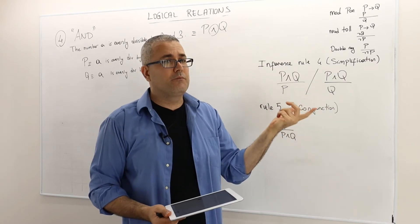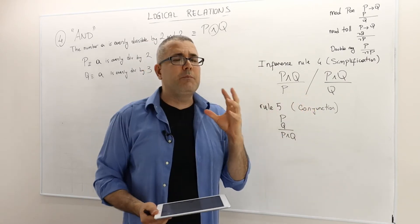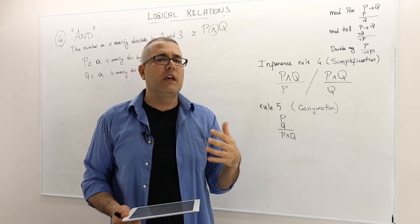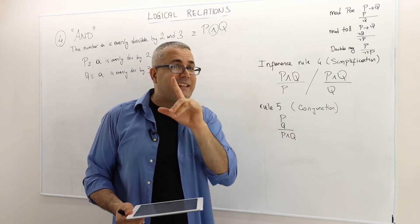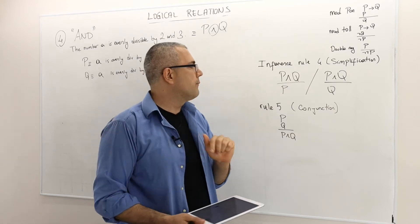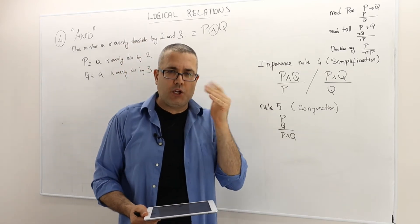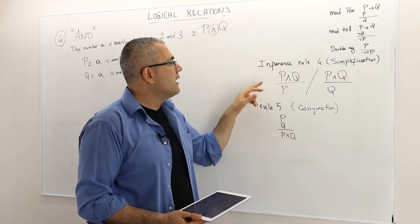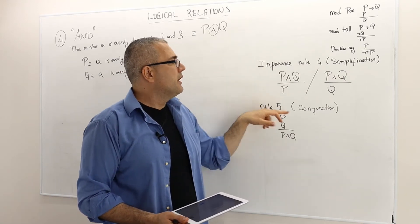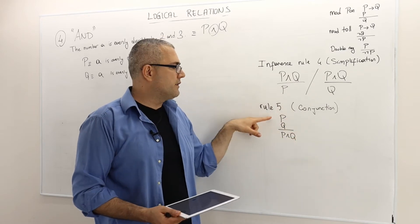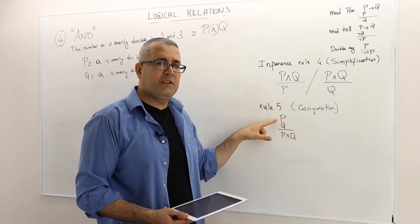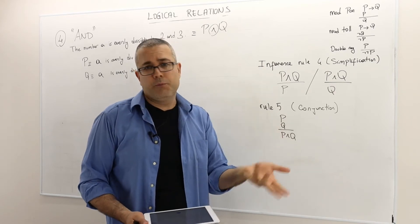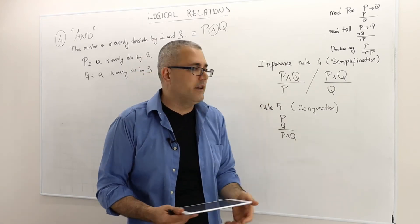Equivalently, Q must also be true. The statement P and Q cannot be true if both of those arguments are wrong — it can be wrong when at least one of the arguments is wrong. That's pretty logical and intuitive, but it's a rule we can use in our proofs. The next rule is what we call conjunction: if P is true and Q is true, then P and Q must be true. That's also pretty logical and intuitive.